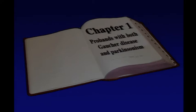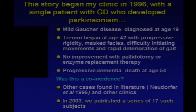I was asked to begin with a case report — the first patient I saw back in 1996 that started the whole story for me. She was diagnosed with Gaucher disease in her late teens, had a mild course with a splenectomy but few problems, and had not thought much about her diagnosis. When she was 42, she developed a tremor with progressive rigidity, masked facies, difficulty initiating movements, and rapid deterioration of her gait. They tried pallidotomy with no improvement, and also enzyme replacement therapy for Gaucher disease — again with no improvement of her Parkinsonism. We first saw her at NIH when she was about 49.